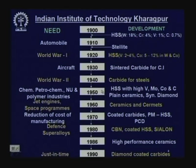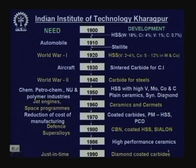Also in 1950, plain ceramics like alumina and silicon nitride were developed, along with synthetic diamond. Single crystal diamond was found to work very well in some machining activities, and synthetic diamond was also developed around 1950.